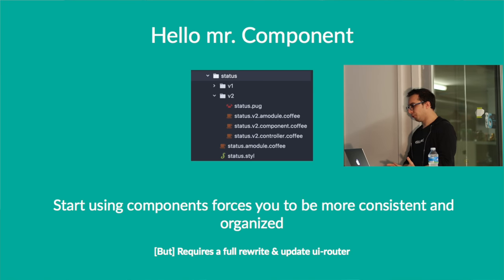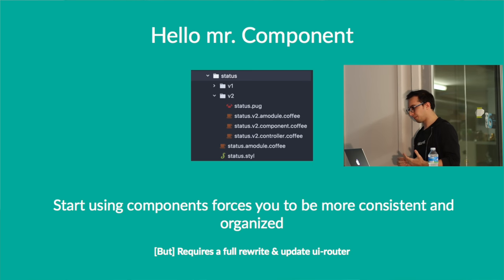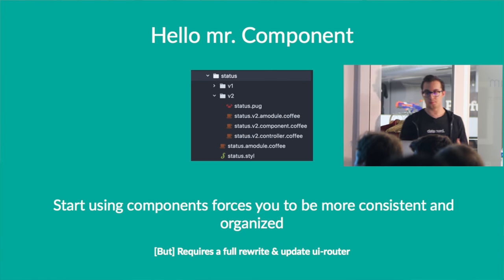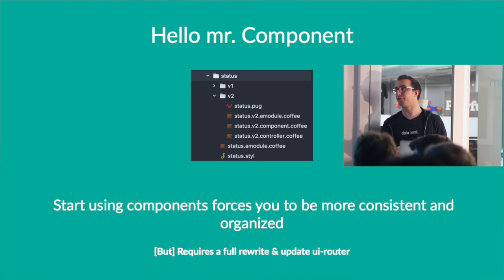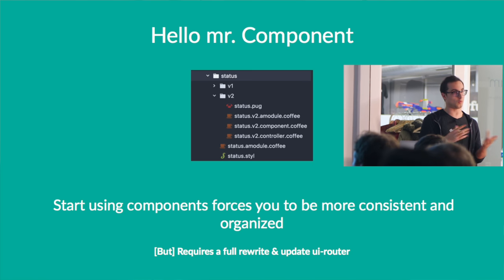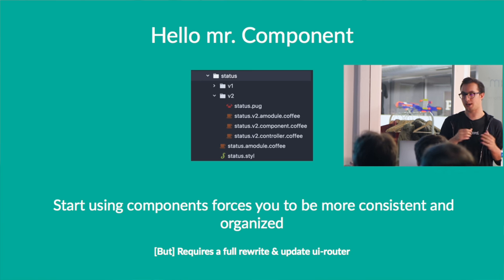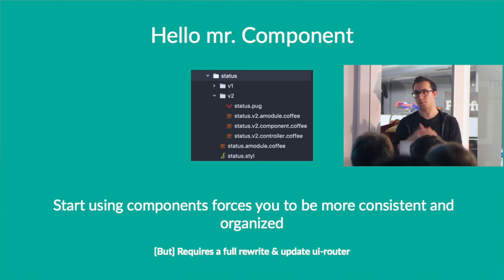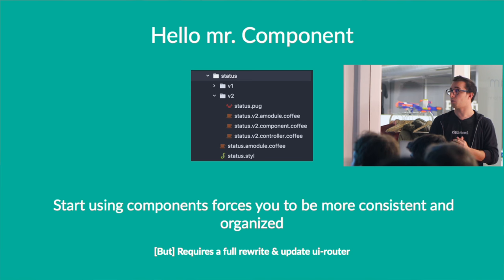We decided to take a little step forward. After researching how to make our app better, I stumbled upon a post from a guy who knows a lot about Angular — Todd Motto — talking about Angular 1.5 components. Those components, if you don't know what they are, are little black boxes that encapsulate part of your website so you can reuse them in different places — like a product card you can render in multiple places.